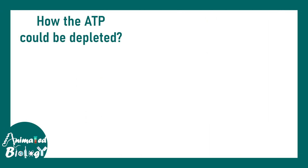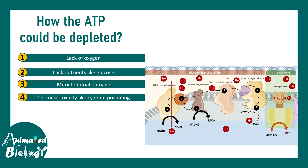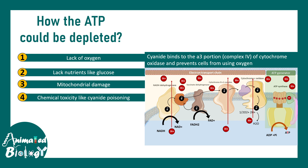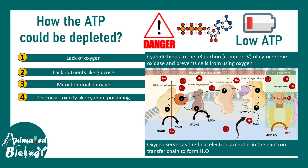ATP can be depleted due to lack of oxygen, lack of nutrients like glucose during starvation, mitochondrial damage, or chemical toxicity affecting oxidative phosphorylation. In oxidative phosphorylation, oxygen is the terminal electron acceptor. When there is a lack of oxygen, the entire electron transport chain fails and ATP is no longer generated by the F-type ATPases in the mitochondria.